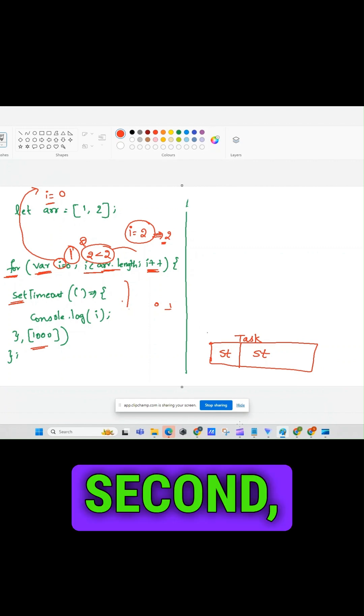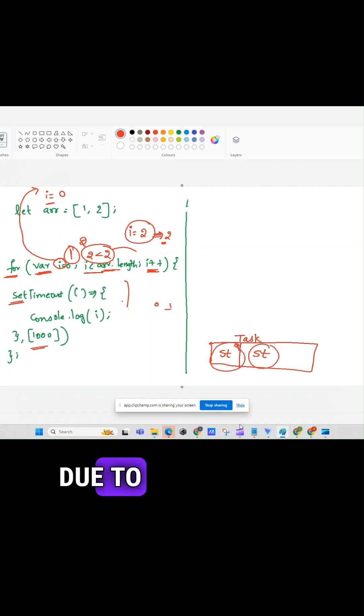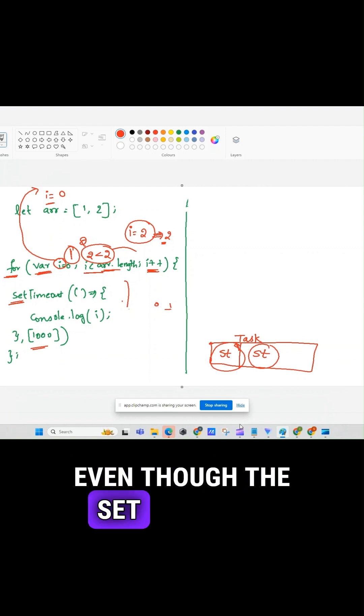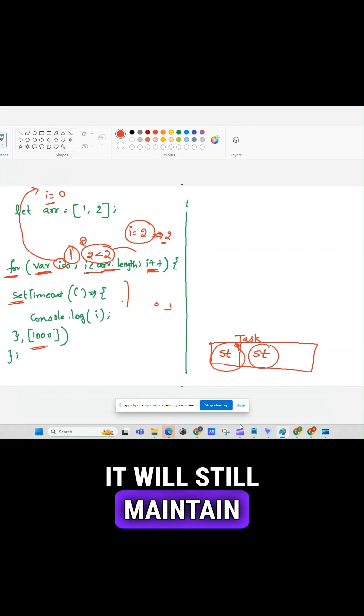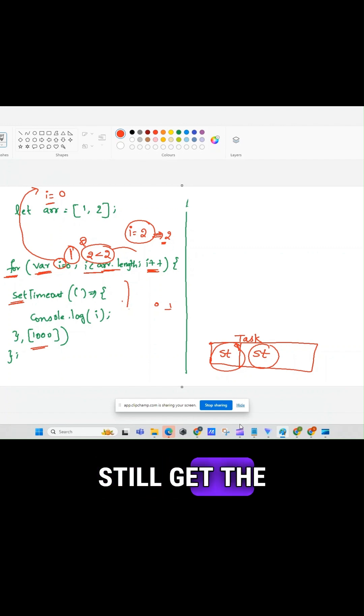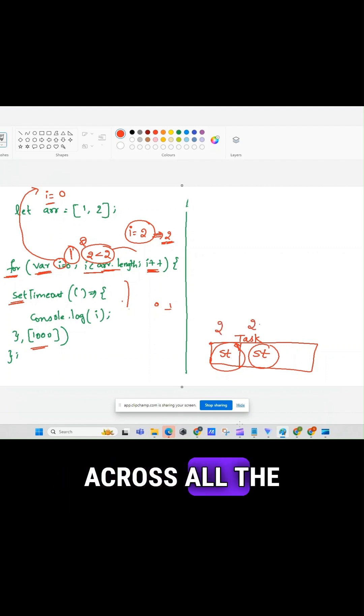Now after 1 second, the JavaScript engine will execute this set timeout. Now due to the closure concept, even though the set timeouts are executed after this for loop has been completed, it will still maintain or still get the value of this i. So what is the value of i here? It will be 2 as it is shared across all the iterations. 2 will be printed across all the iterations now.